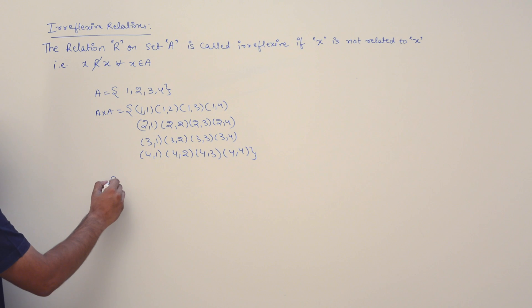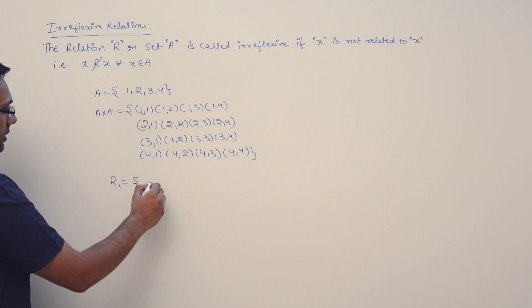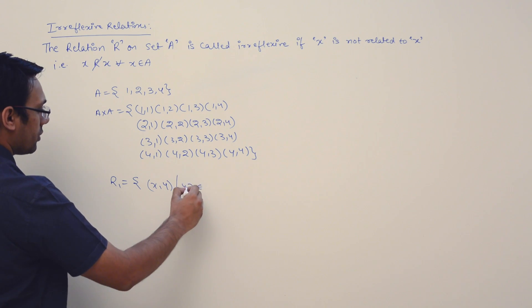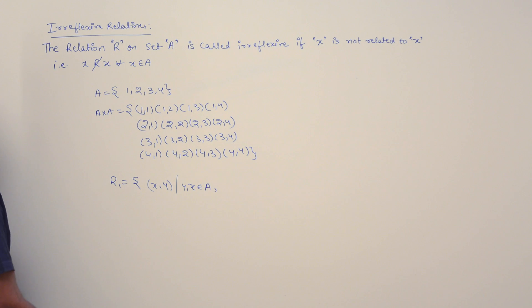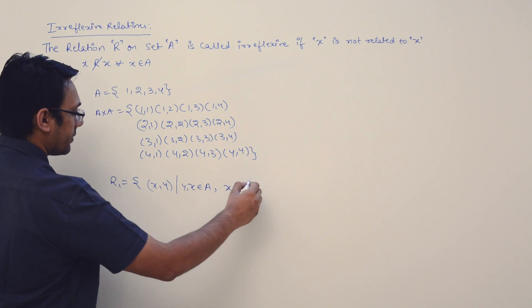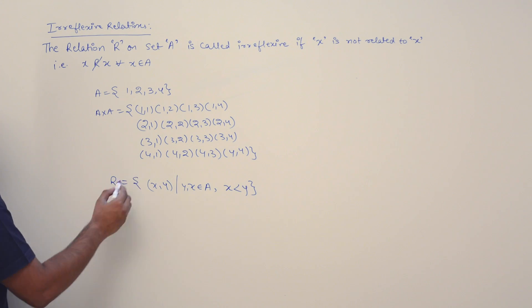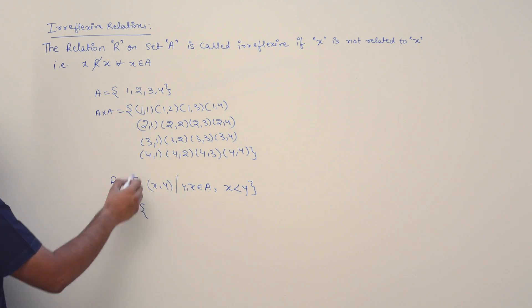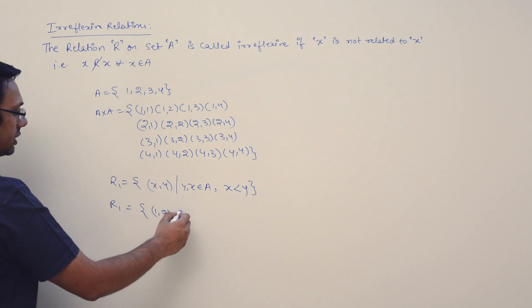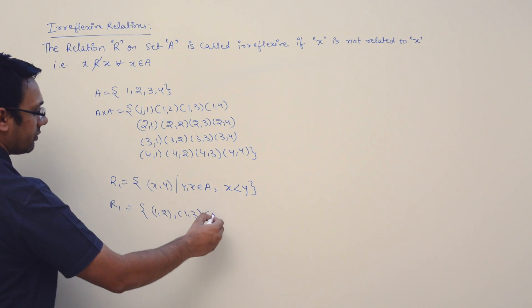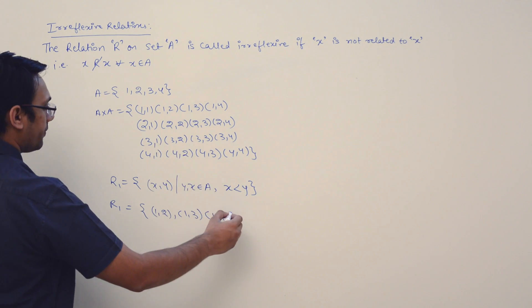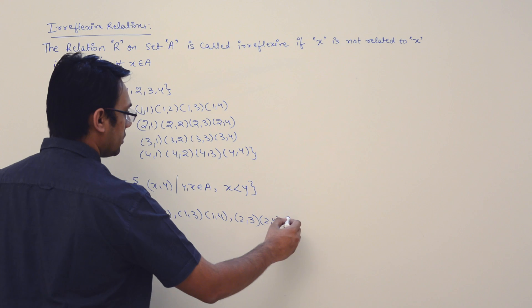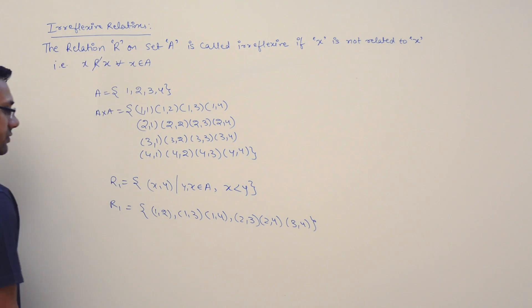For example, I can define relation R1 such that it contains the pair (X, Y) for all X, Y belonging to the set A where X is less than Y. So the elements in R1 will be: (1,2), (1,3), (1,4), (2,3), (2,4), and (3,4).